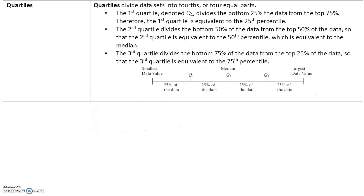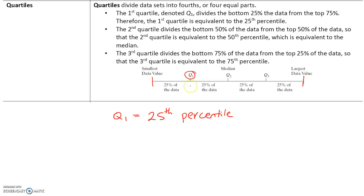Let's talk about quartiles. Quartiles divide data sets into fourths. If this is the smallest data value and this is the largest data value, the first quartile divides the bottom 25% from the top 75%. Therefore, the first quartile, Q1, is equivalent to the 25th percentile, because the 25th percentile means this value is larger than 25% of the values.